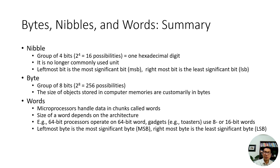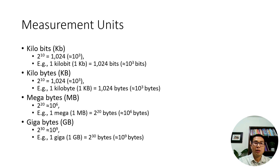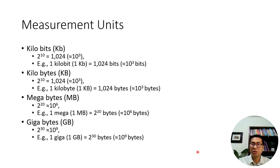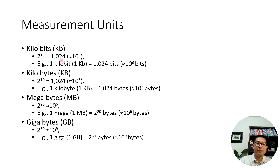This is a summary of what we have covered. The next topic is measurement units. Similar to the decimal system — hundreds, thousands, millions — in computing we use kilobits, which is 2 to the power of 10, roughly equivalent to 10 to the power of 3.